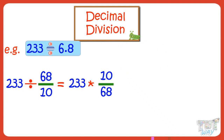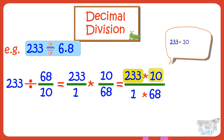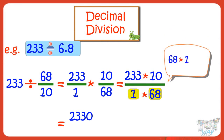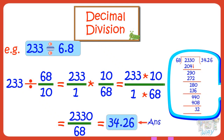You can write 233 as 233/1 to make both numbers in rational number form (p/q). For solving it, divide the product of numerators by the product of denominators. Product of numerators is 233 × 10 = 2330. Product of denominators is 68 × 1 = 68. Dividing 2330 by 68, we get 34.26. So 34.26 is our answer.